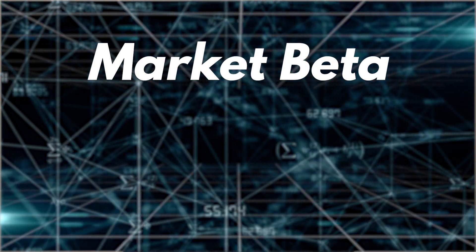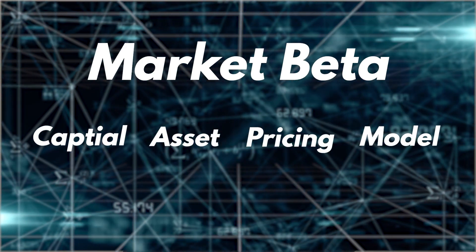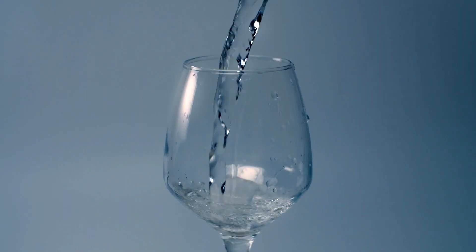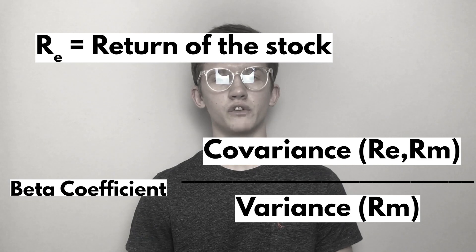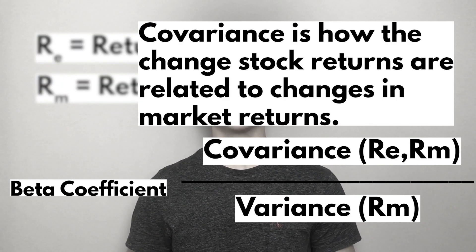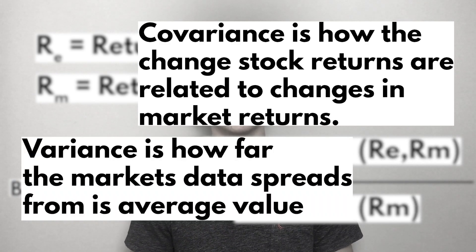First up let's take a look at the market beta or equity risk factor. Market beta was the first of these factors to be discovered and it was first modeled by William Sharpe in his capital asset pricing model, or CAPM for short. Market beta is really just a measurement of how much an asset's price moves in relation to the broader market. The beta coefficient is calculated by the quotient of the covariance of a stock and its variance, where RE is the return of an individual stock and RM is the return of the overall market. Covariance is how changes in stock returns are related to changes in market returns; variance is how far the market's data points spread out from their average value.